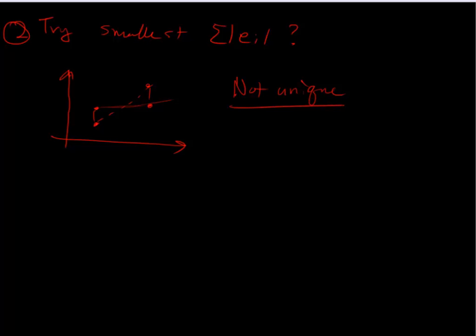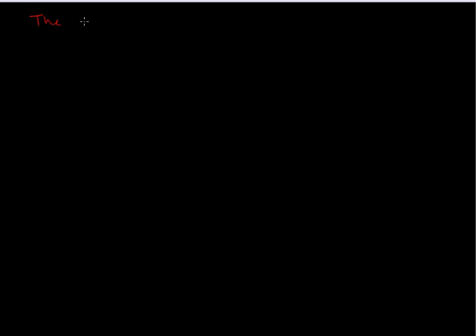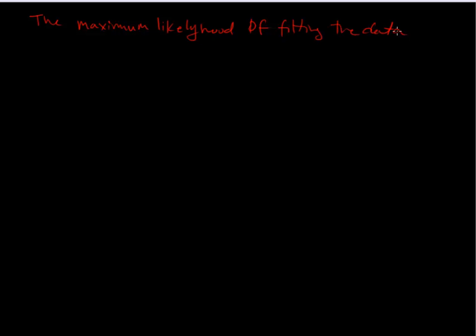What's done in practice is we want to minimize the sum of the squares of the error. It turns out that statistically, the maximum likelihood of fitting the data minimizes the error. The maximum likelihood is a statistical term which means it's the best fit.